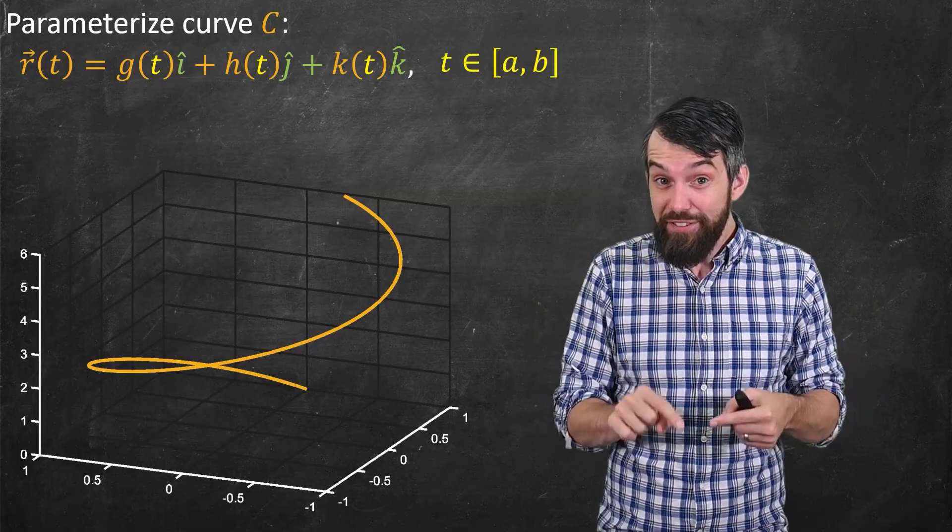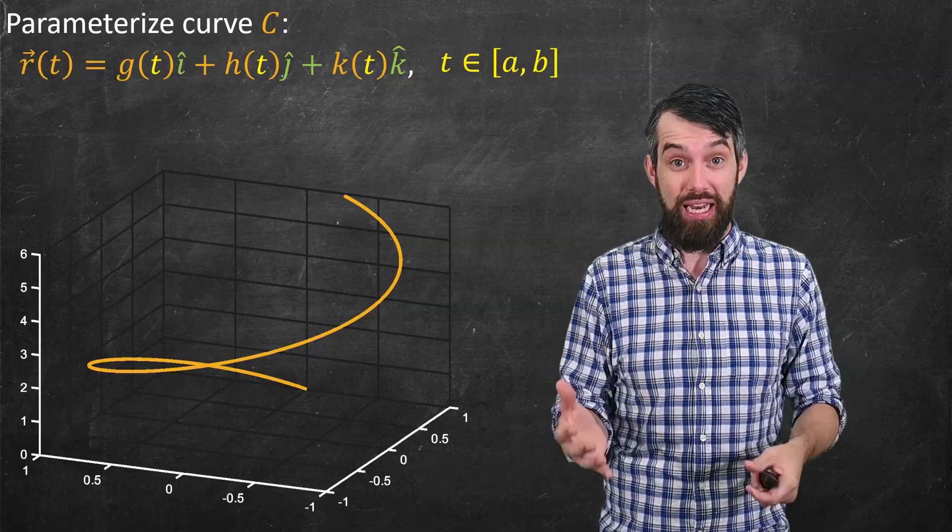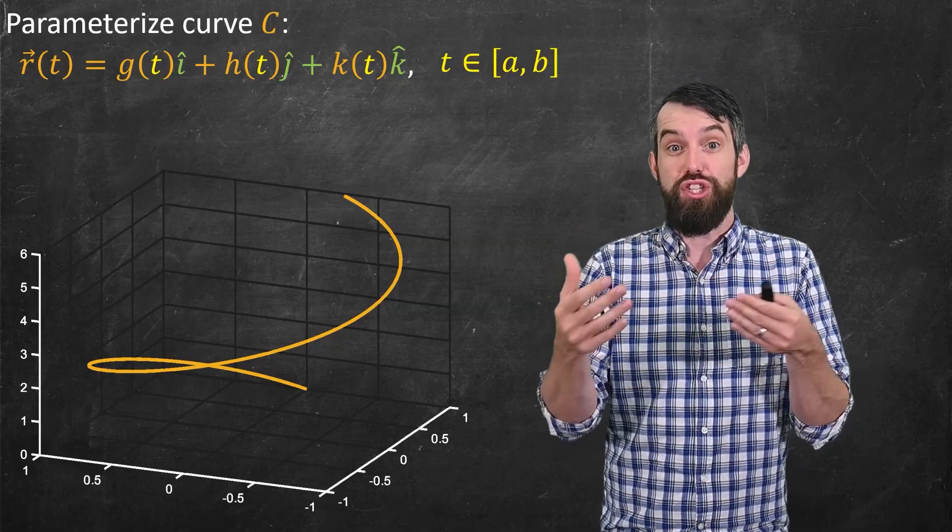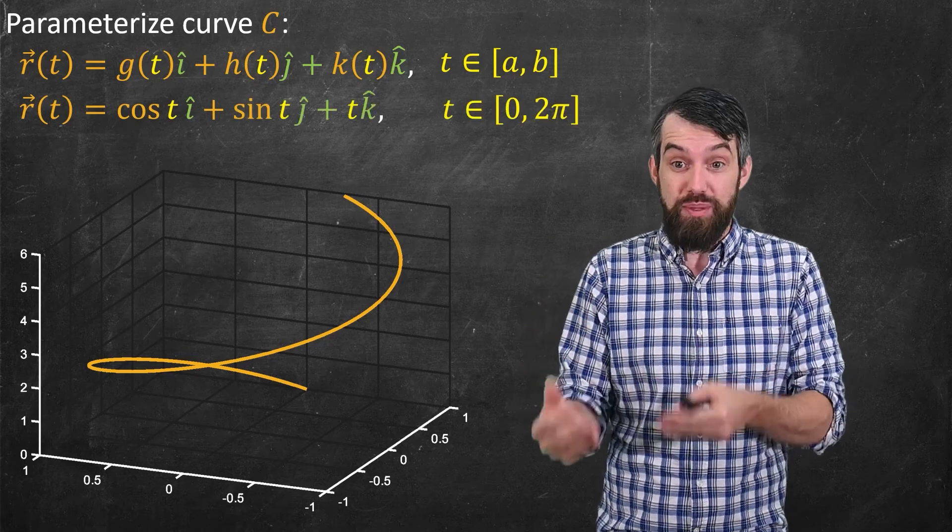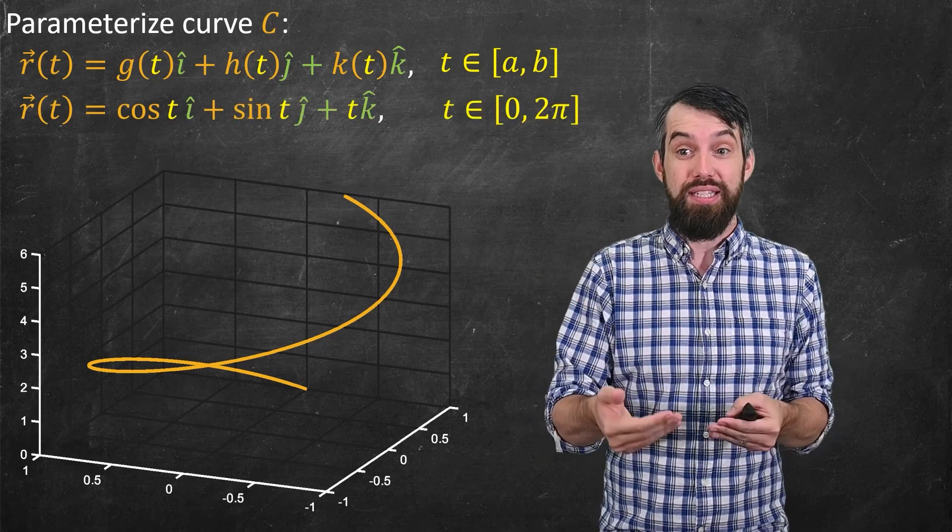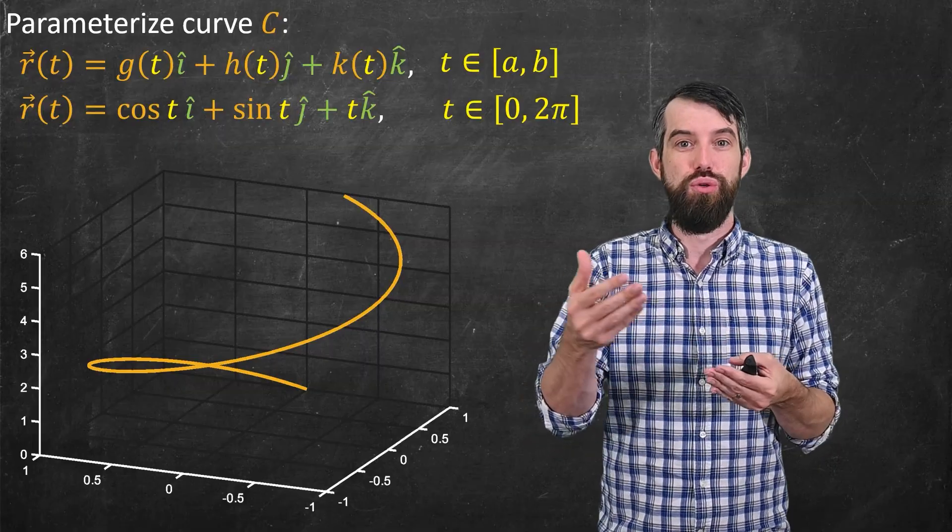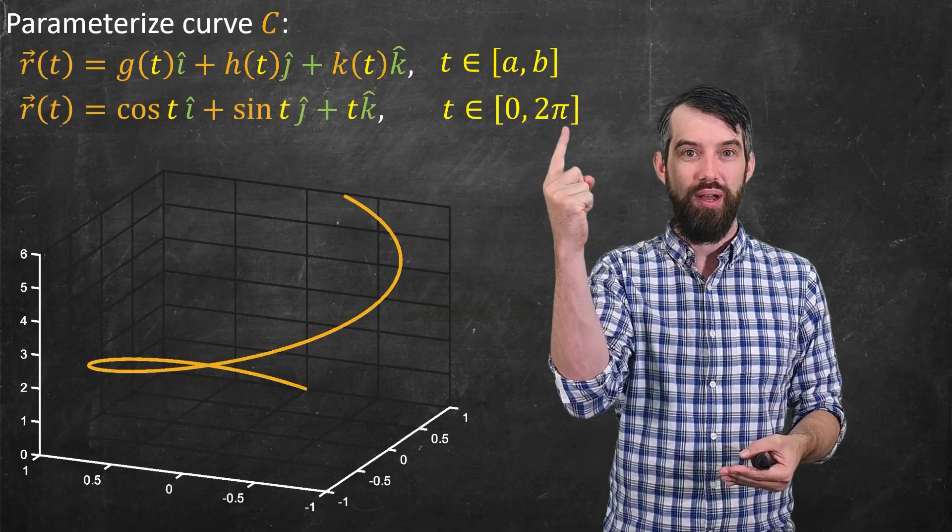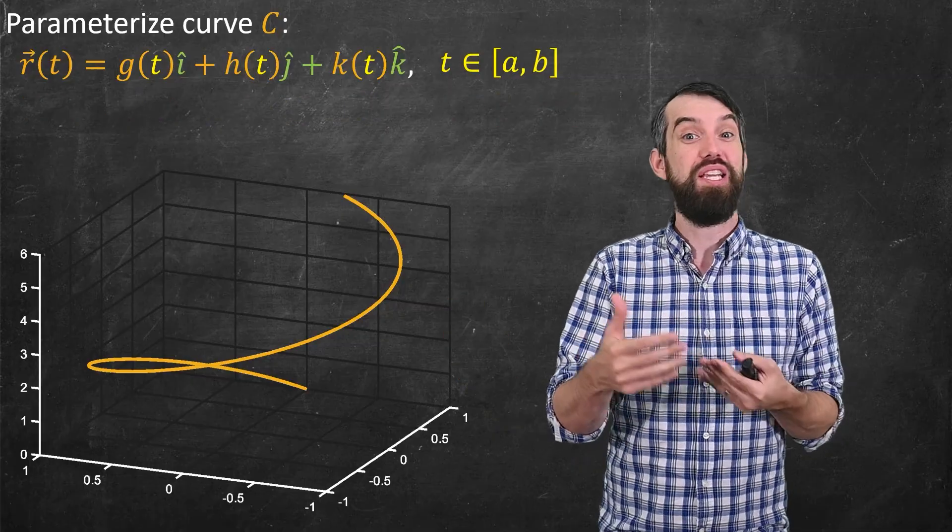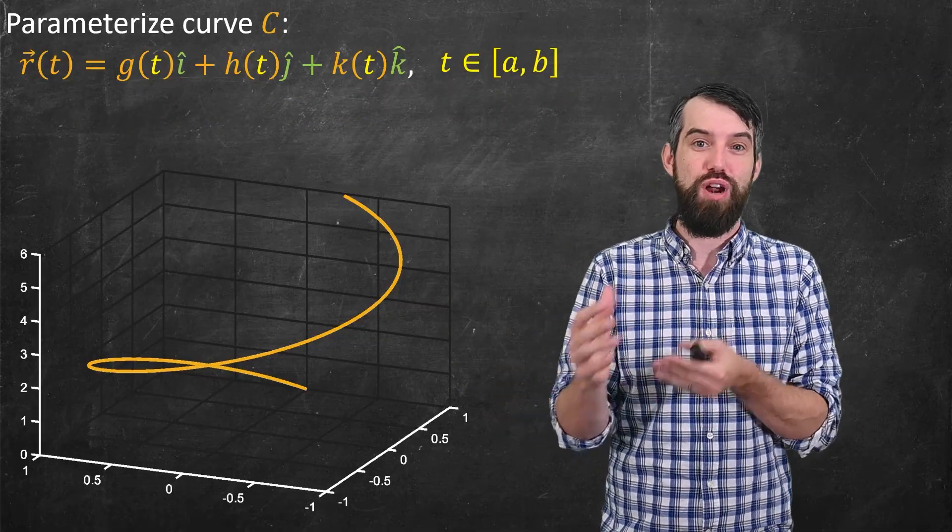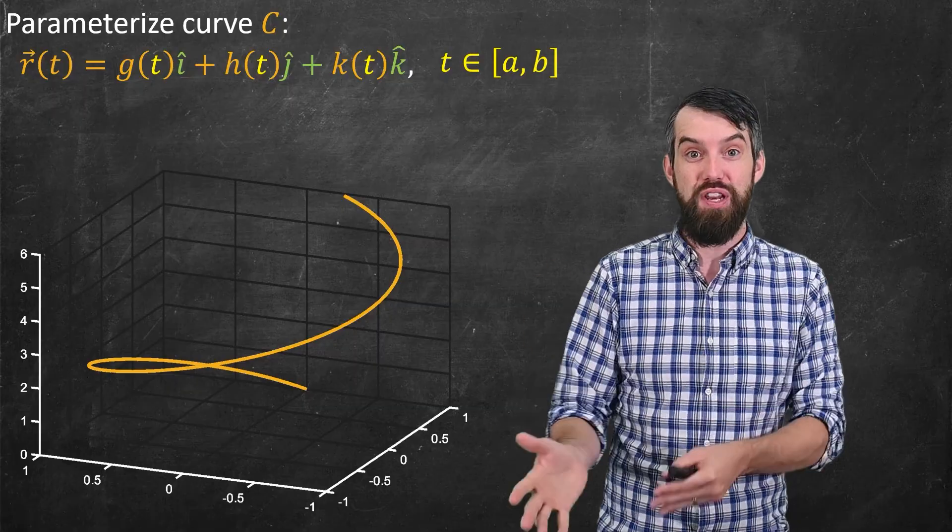Now, this specific example is a very important one. It's a helix. And so we'll actually put up what the functions g, h, and k are in this specific example. It's cos(t), sin(t), and then just t in the k-hat direction. On the interval 0 to 2π gives you one loop of this helix. So this is a particularly nice curve that has this nice parameterization, but we'll just talk generally for most of this video.